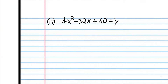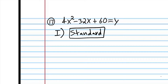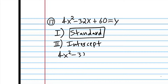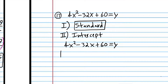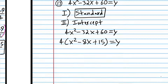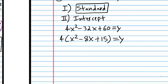We're back. First, let's identify the form — obviously standard form. Now we're going to convert to intercept form. I'm just going to factor out a greatest common factor because it turns out all these problems have GCFs. If you're worried you didn't factor properly, just multiply back to verify.